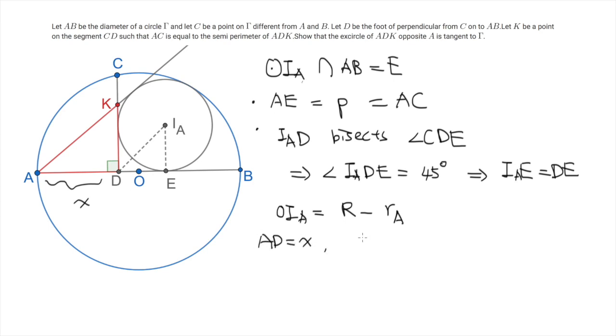So let's call AD equals X, and in particular, X is between 0 and 2R. Now by simple similarity argument, we have AC squared equals AD times AB. And this implies that AC equals the square root of 2RX.